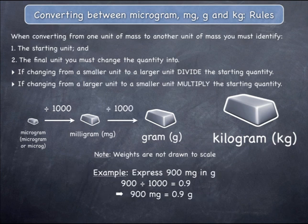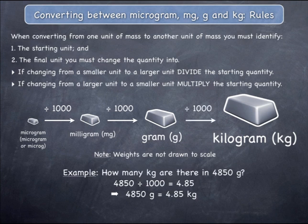If you are changing a quantity from milligrams to grams, you must divide the starting quantity by 1000, as shown. And if you are changing a quantity from grams to kilograms, you must divide the starting quantity by 1000, as illustrated.